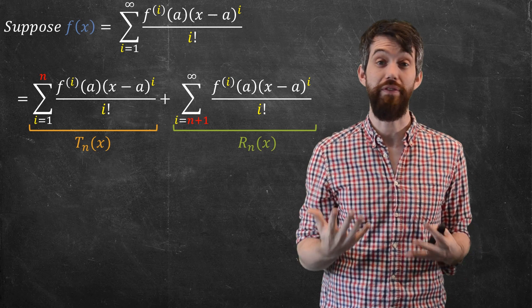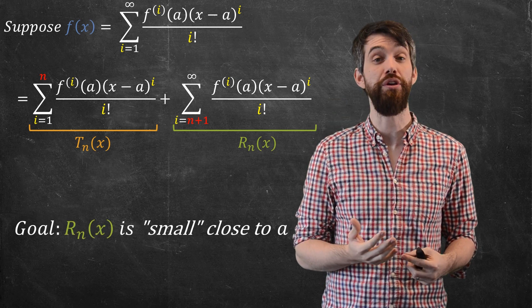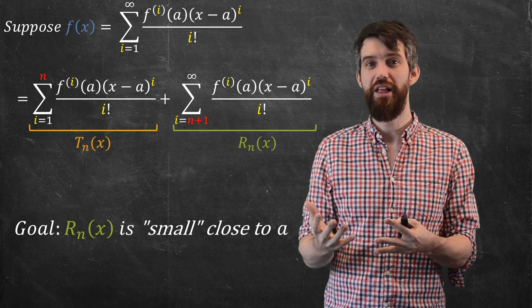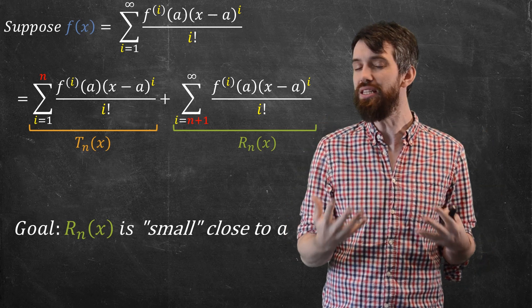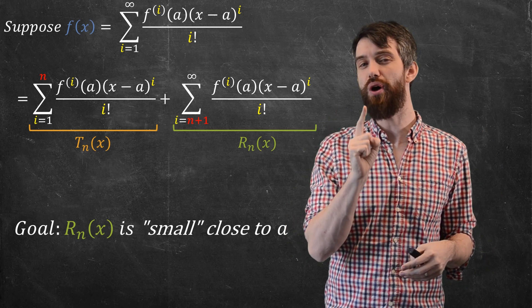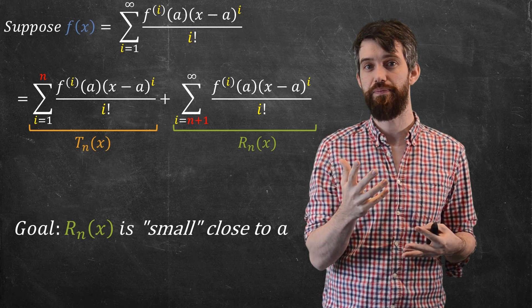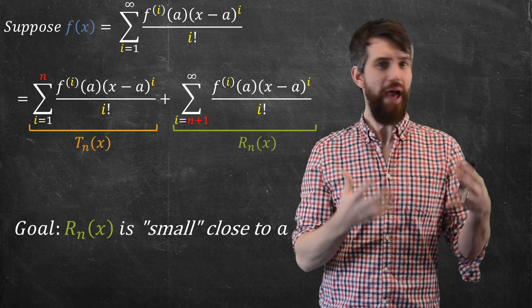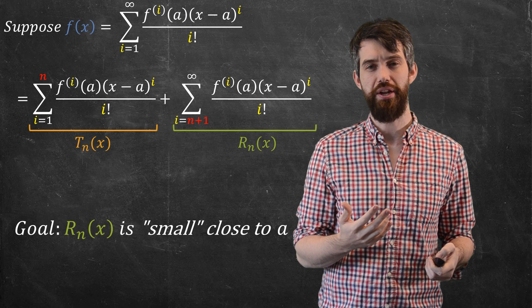And then what the goal of this video is to take that remainder and argue that in an appropriate sense, this can be considered small, at least small when your x values are near a, the center of your series. So let's try to graph a few things and get a sense of what's going on here.